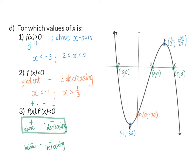Looking at the first option — the function above the x-axis — we need a negative gradient, meaning decreasing. Focusing on the parts already marked as above the x-axis, we identify the parts that are also decreasing: everything to the left of A, and in the second part everything to the right of F. This gives x < -3 or x > 11/3.